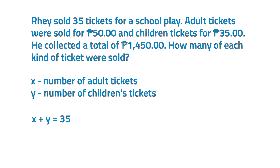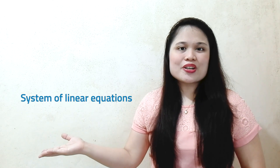The total collection from the cost per kind of ticket can be represented by the equation 50x plus 35y is equal to 1,450. Together, the system consisting of the two linear equations in two variables can be written like this. The two equations make up a system of linear equations in two variables. Notice that a brace is used to indicate that the equations form a system. A collection of two or more linear equations, each containing one or more variables, is called the system of linear equations.